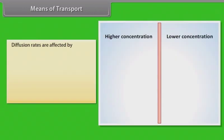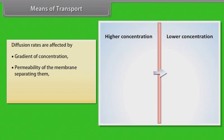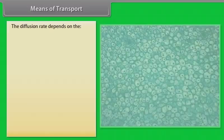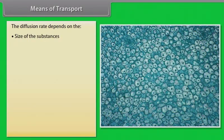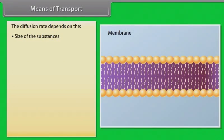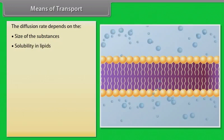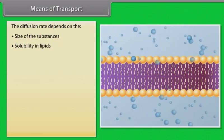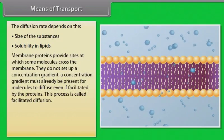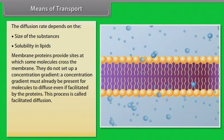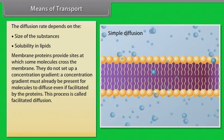Diffusion rates are affected by the gradient of concentration, the permeability of the membrane separating them, temperature and pressure. The diffusion rate also depends on the size of the substances — obviously smaller substances diffuse faster. The diffusion of any substance across a membrane also depends on its solubility in lipids, the major constituent of the membrane. Membrane proteins provide sites at which some molecules cross the membrane.